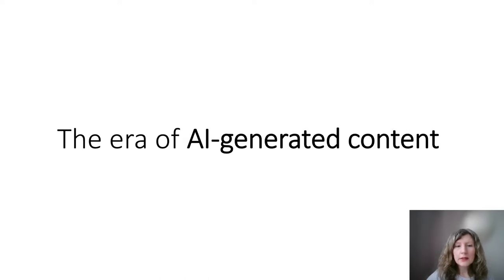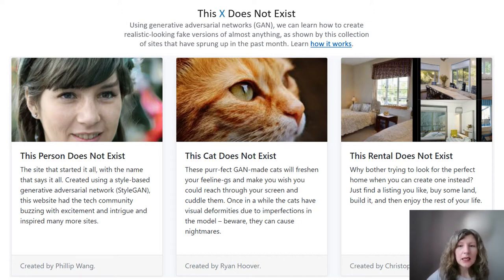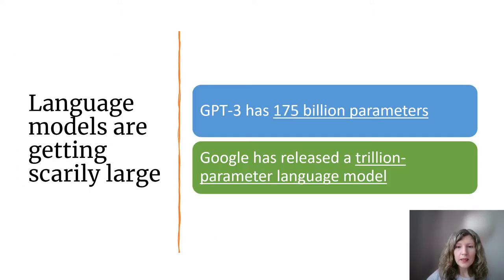We are really living in the era of AI-generated content right now. We've all seen GANs that can generate very realistic-looking photos of people that don't exist, or even cats that don't exist, and even Airbnb rentals that don't exist in real life. At the same time, language models are becoming scarily large and scarily effective at fooling people into thinking that they are seeing human-written text.